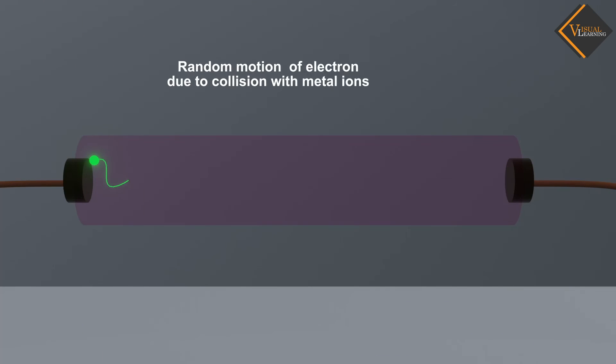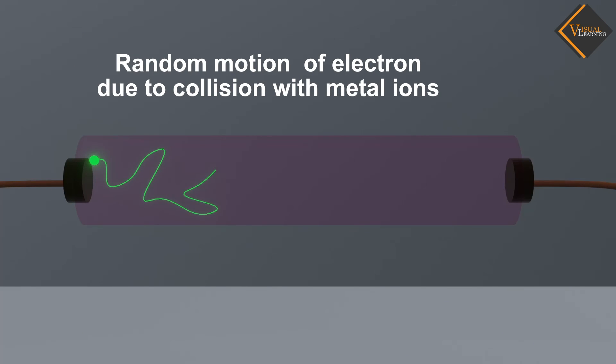The electrons collide with the metal ions multiple times and with each collision, their velocity and direction change. This repeated change in velocity is what we refer to as drift velocity.